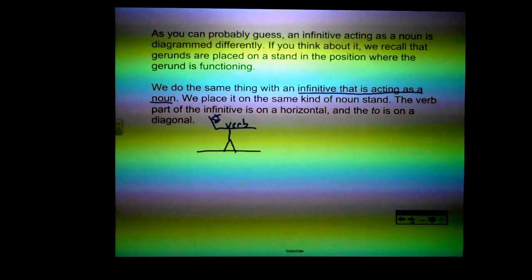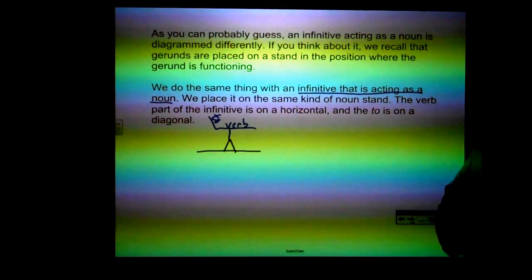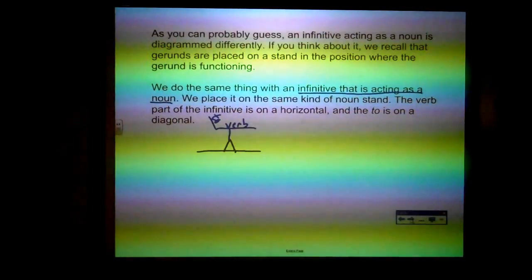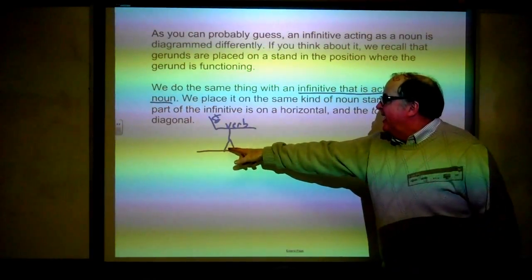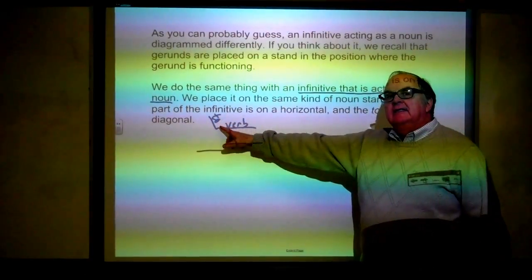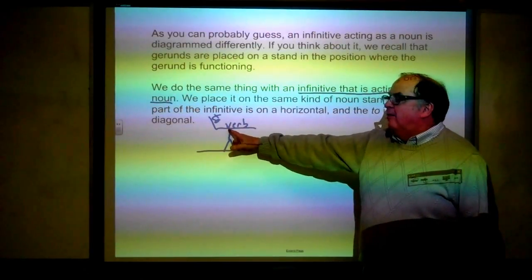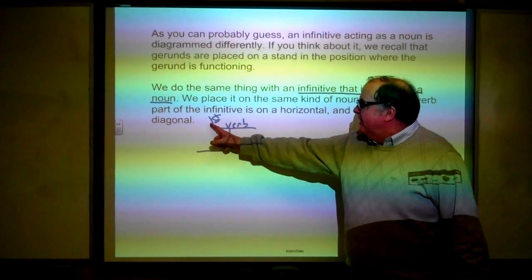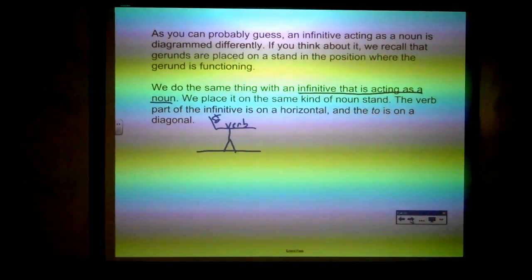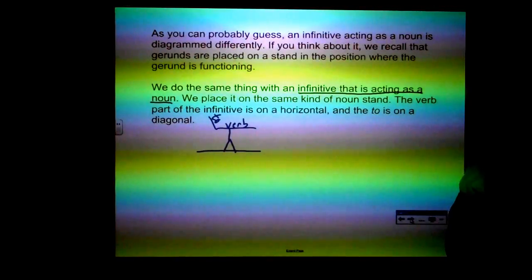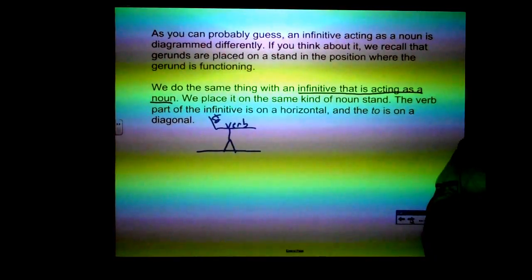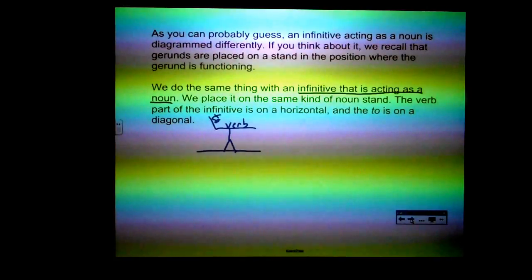Infinitives acting as nouns are diagrammed differently. If you remember when we did gerunds, gerunds were placed on a noun stand — kind of like an upside-down Y. We do the same thing with an infinitive acting as a noun. We place it on the same kind of noun stand. Nouns are always on a horizontal, so we put the noun stand on the horizontal with the infinitive on top. Over the fulcrum of the noun stand is the verb, and then we have the diagonal going up from there with the "to." This is true no matter where the infinitive phrase functions — subject, direct object, indirect object, object of preposition, object complement, or appositive — it's diagrammed the same way.